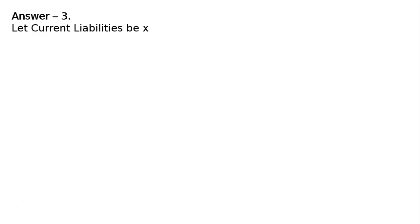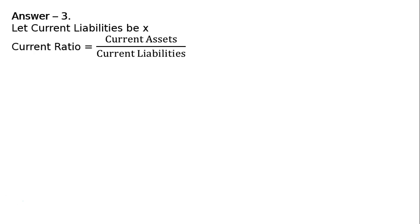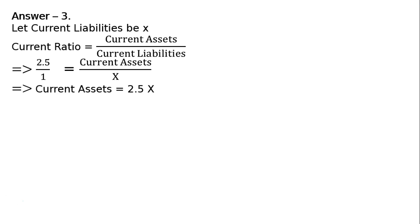Answer 3: Let the current liabilities of the firm be X. Current ratio is equal to current assets upon current liabilities. We have been given that current ratio is 2.5 upon 1, which is equal to current assets upon X. Therefore, current assets is equal to 2.5X.